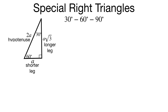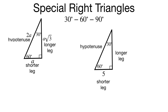Let's look at a few examples. In the first example, I've got a 30-60-90 triangle and one leg length is 5. The 5 is opposite the 30, so it's the shorter leg. To get the hypotenuse, we do twice the shorter leg length: 5 times 2 gives us a hypotenuse of 10. To find the longer leg, we take the shorter leg and multiply by the square root of 3, so the longer leg will be 5 times the square root of 3.